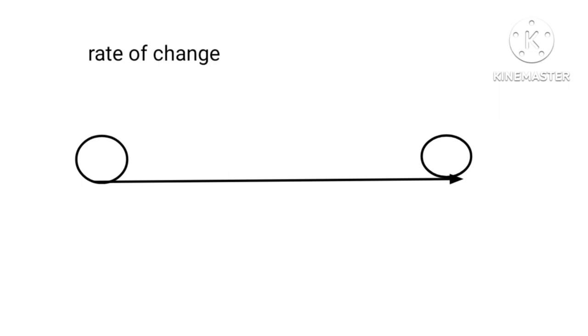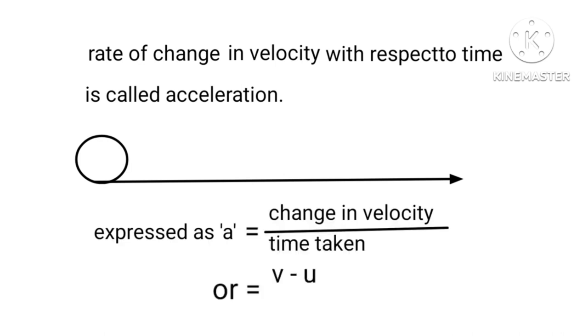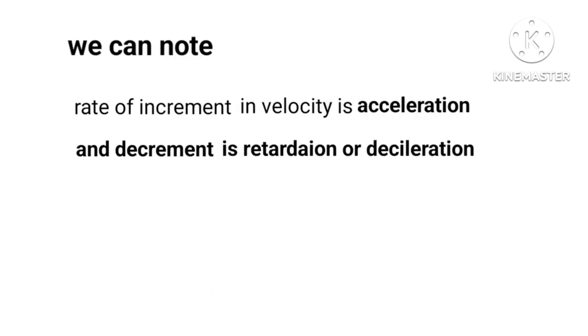Hence, rate of change in velocity with respect to time is called acceleration. Expressed as A equals rate of change in velocity upon time taken or A equals V minus U whole upon T. SI unit meter per second square. Is a vector quantity. We can note, rate of increment in velocity is acceleration, and decrement is retardation or deceleration.